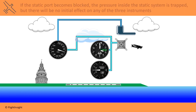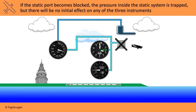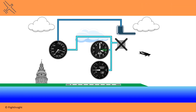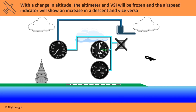If the static port becomes blocked in flight, the pressure inside the static system is trapped and cannot change with altitude changes. Initially, there won't be any effect on any of the three instruments until a change in altitude is made. The altimeter will be frozen while the VSI will read zero. The increased pressure in the pitot system will cause the airspeed indicator to read inaccurately higher.